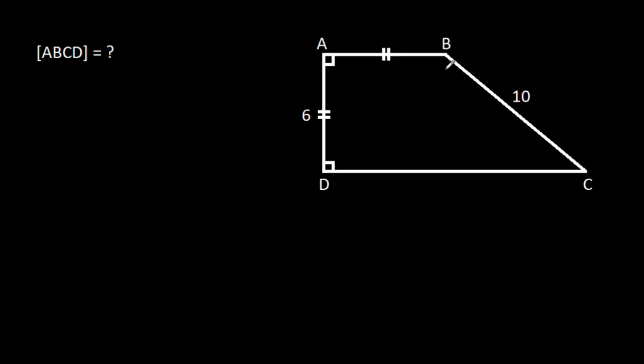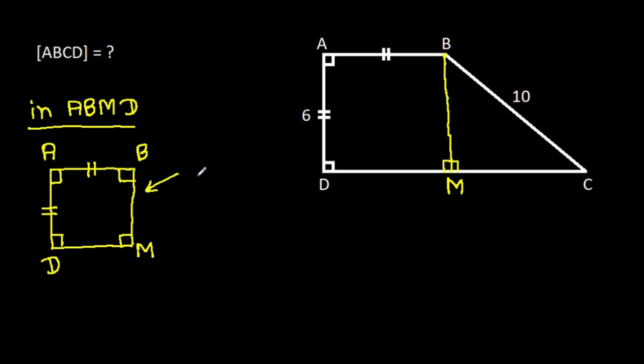So, from point B, if we make a perpendicular on CD, suppose this point is M, then in ABMD, it is A, B, M, D. These three angles are 90 degrees, that means this angle, it will be also 90 degrees. And AB, it is equal to AD, that means it will be a square.